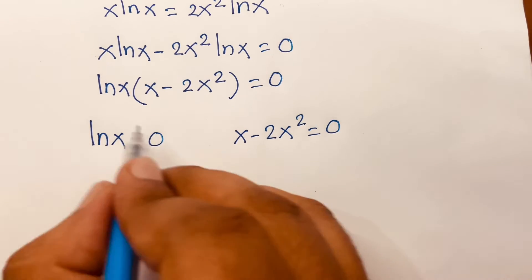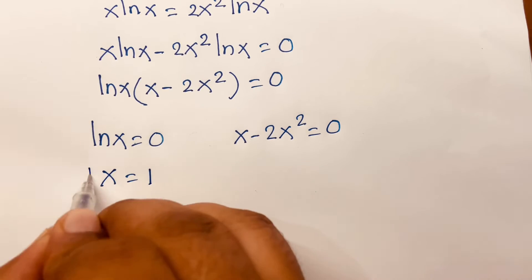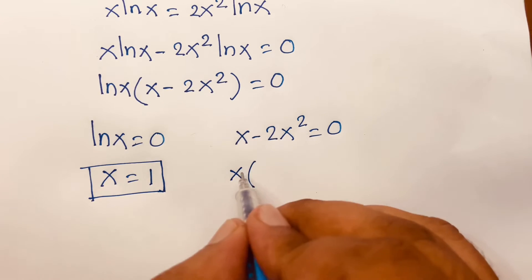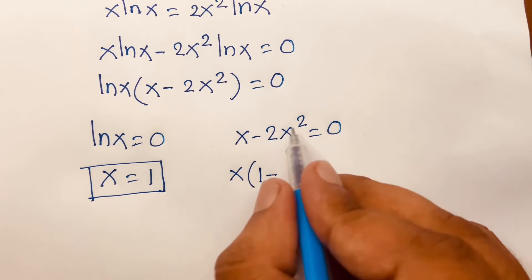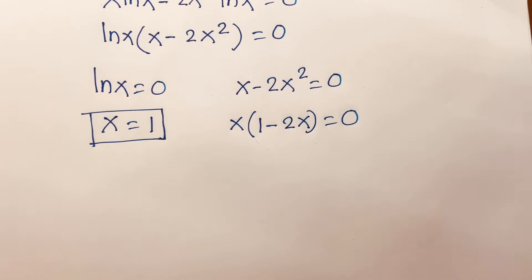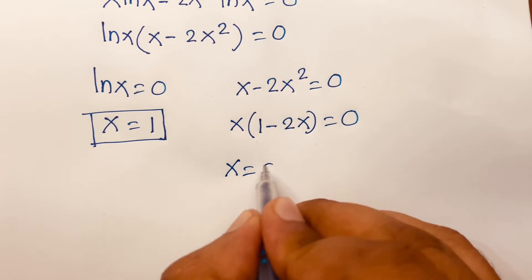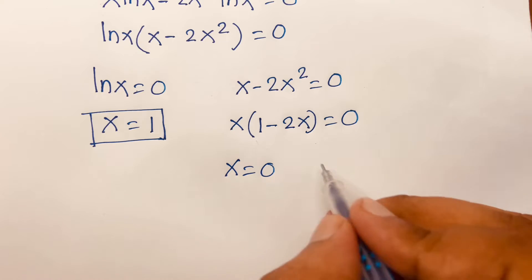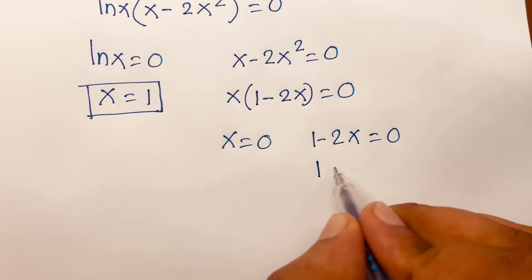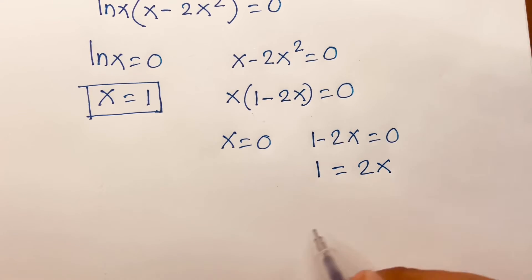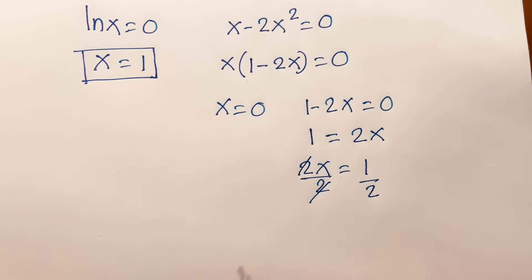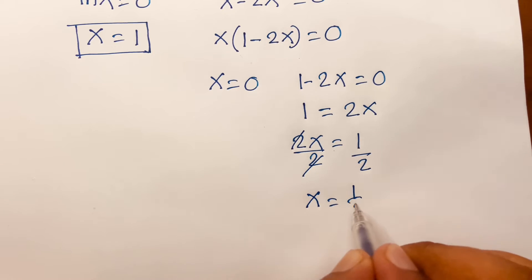From ln(x) = 0, this equation gives x = 1. For x minus 2x² = 0, x is common, so we get x times (1 minus 2x) = 0. So x = 0 or 1 minus 2x = 0, which gives 2x = 1. Dividing both sides by 2, we find x = 1/2.